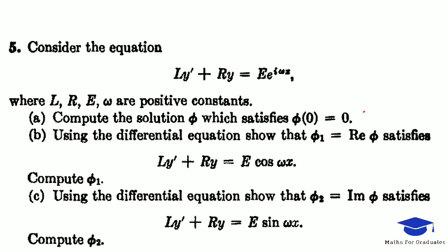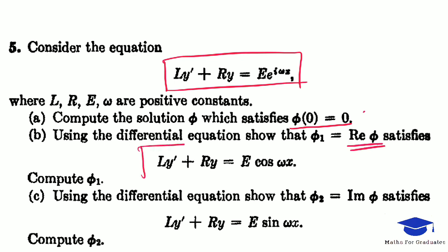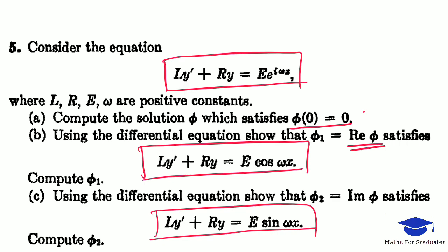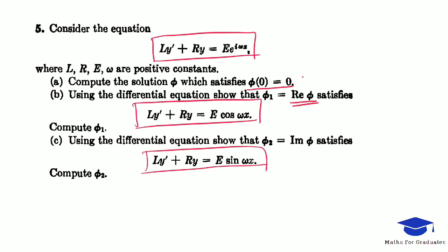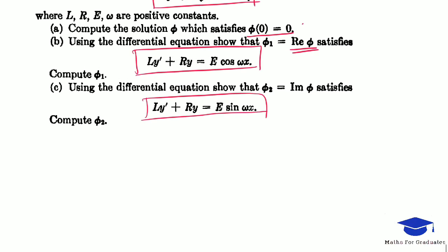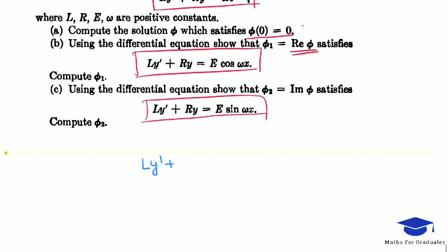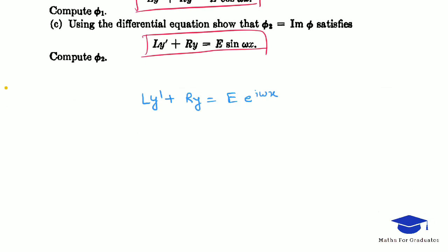Next question: we solve the differential equation for the condition φ(0) = 0. In the second part, we verify that the real part of the solution φ is a solution for one differential equation and the imaginary part is a solution for another. The ODE is Ly' + ry = E·e^(iωx). We first convert to standard form by dividing by L: y' + (r/L)y = (E/L)·e^(iωx).